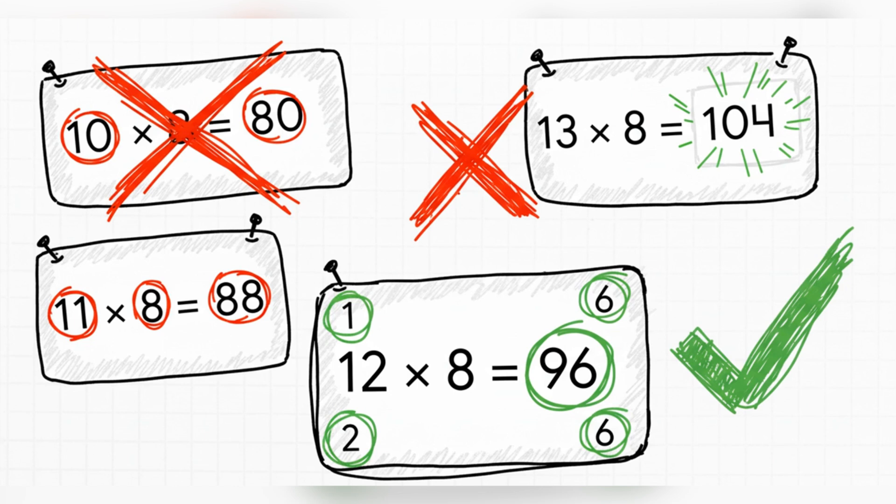And just to be sure, what if we try 13? Well, 13 × 8 is 104, and that's a three-digit number, so that's too big. So, it has to be 12. That's our only answer.